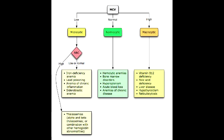What can you look at to classify different types of anemias? When you want to classify different types of anemias, first you would need to look at the mean corpuscular volume, and this can allow you to determine the size of the red blood cells. Mean corpuscular volume, or MCV, is a measure of the average red blood cell volume that is reported as part of a standard complete blood count.